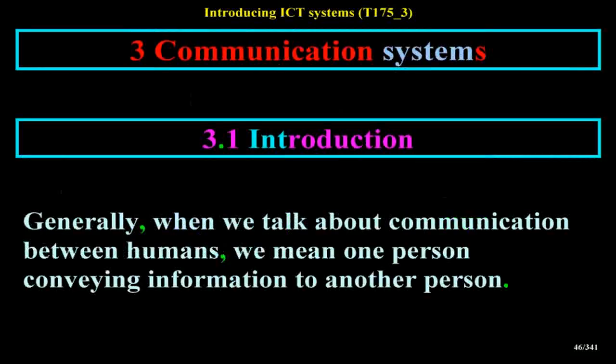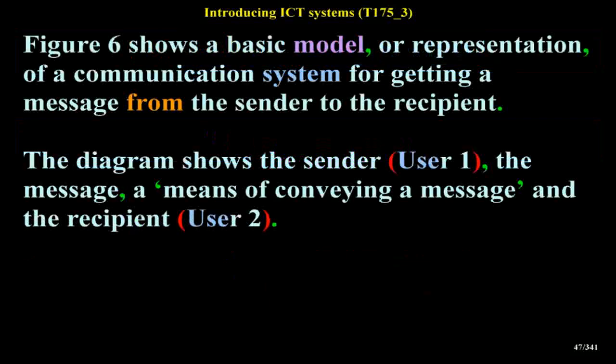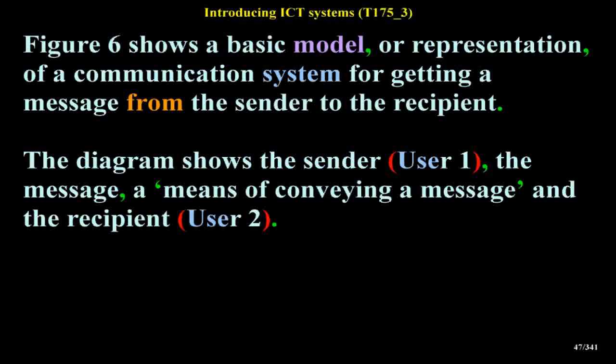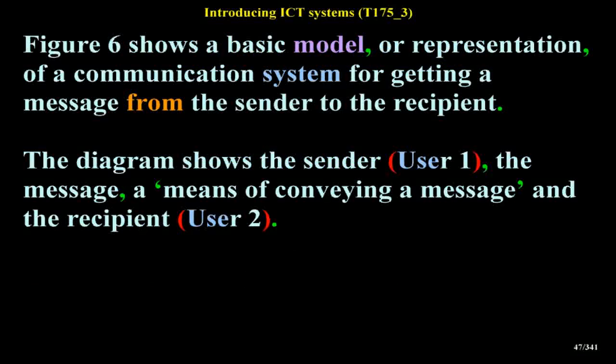Three communication systems. Generally, when we talk about communication between humans, we mean one person conveying information to another person. Figure 6 shows a basic model of a communication system for getting a message from the sender to the recipient. The diagram shows the sender (user 1), the message, a means of conveying a message, and the recipient (user 2).